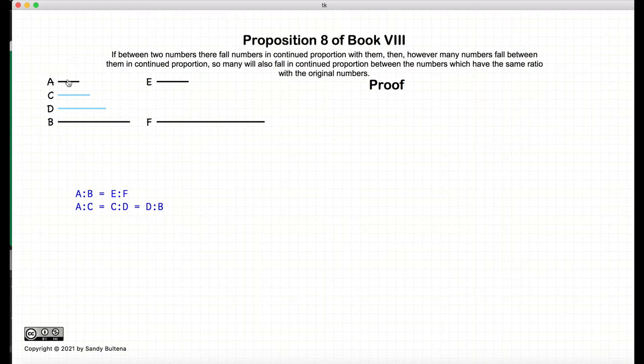So again, we're starting off with a to b is equal to e to f, and there's two numbers c and d, such that a, c, d, b are proportional.